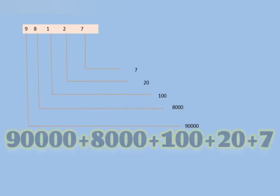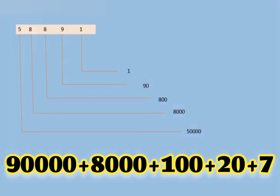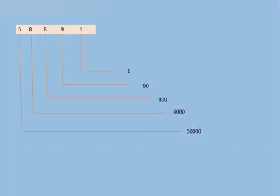Now we have 98127. 9 is on the 10,000's place, 8 is on the 1000's place, 1 is on the 100's place, 2 is on the 10's place, and 7 is on the 1's place.